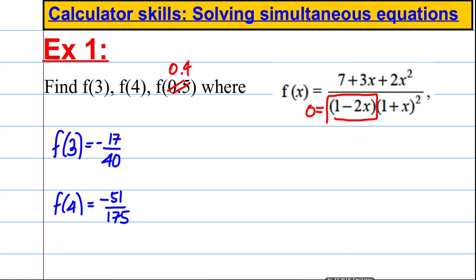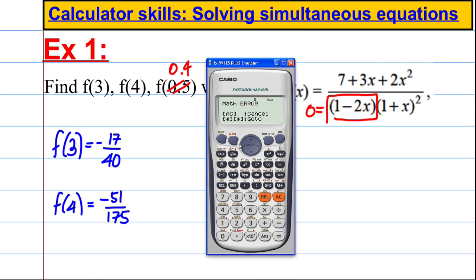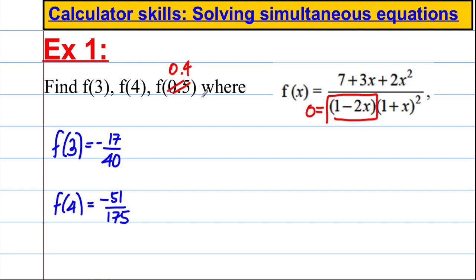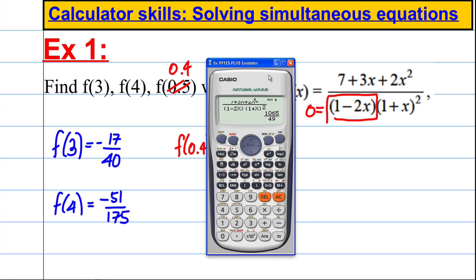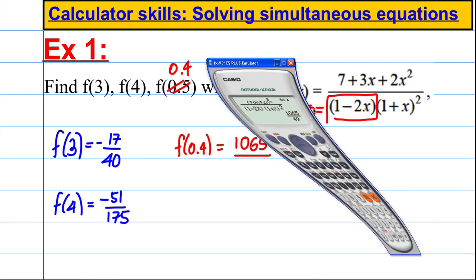Okay, so we go back on our calculator, we can press back like that, and we press calculate 0.4. And we get 1065 over 49. So f(0.4) = 1065/49.